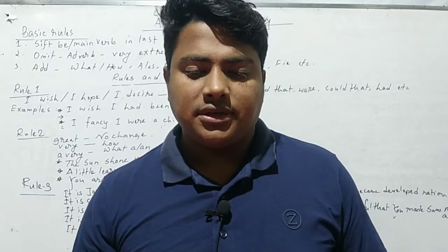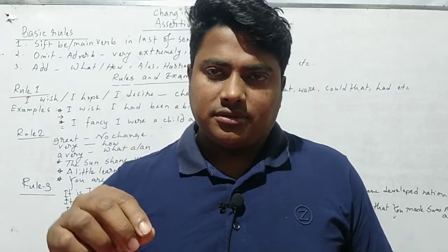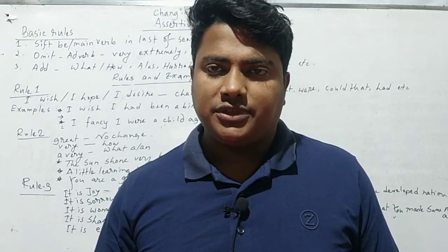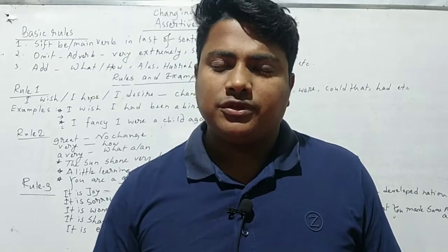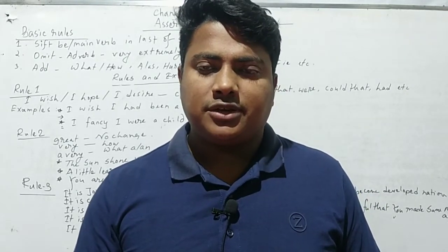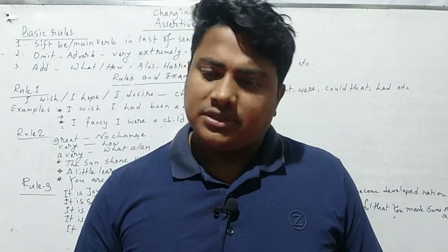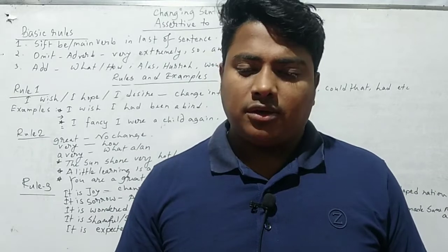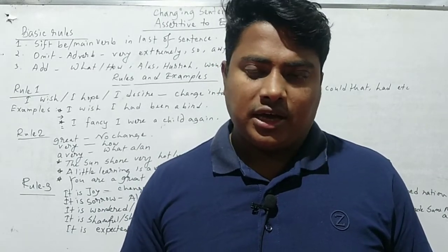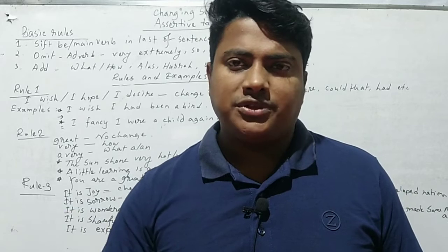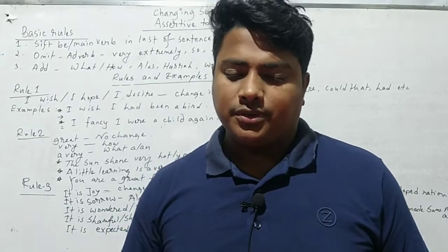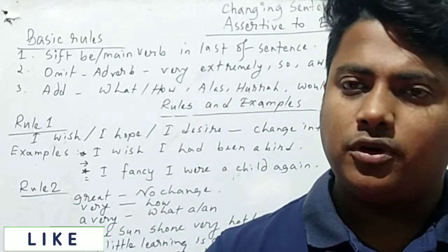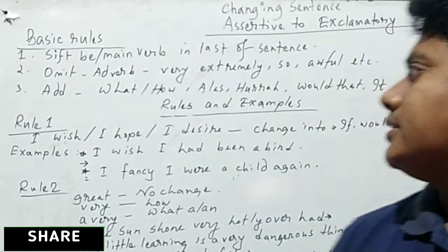We know exclamatory sentences. In an exclamatory sentence, the verb will sit in the last position of the sentence and the subject will sit in the middle position. Exclamatory sentences start with the object. Sometimes they start with the subject, but when it takes 'what' or 'how,' how or what takes object, then subject, then verb.